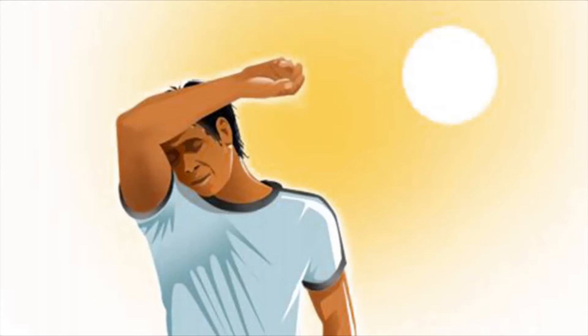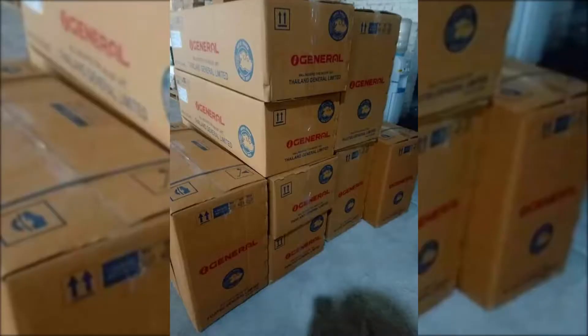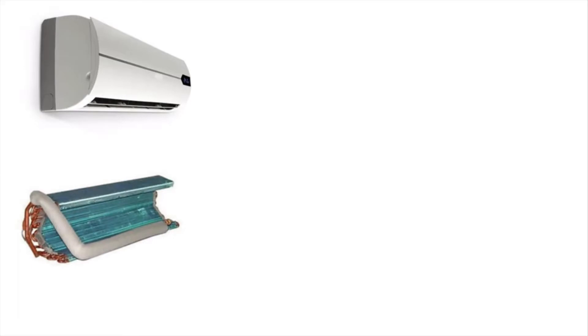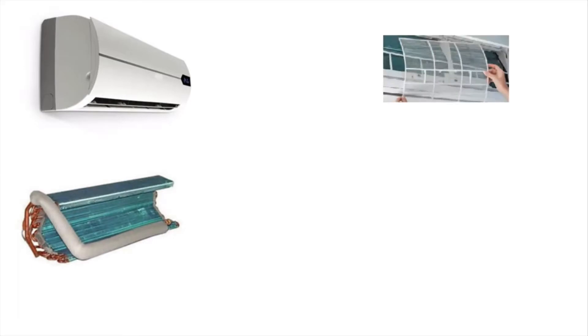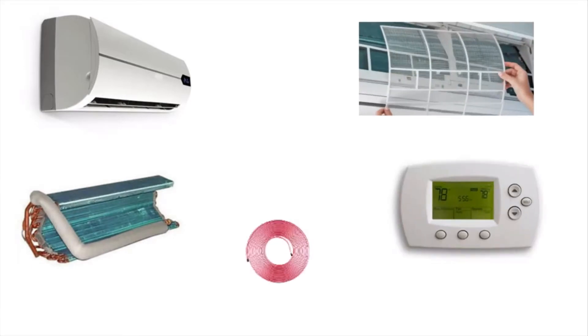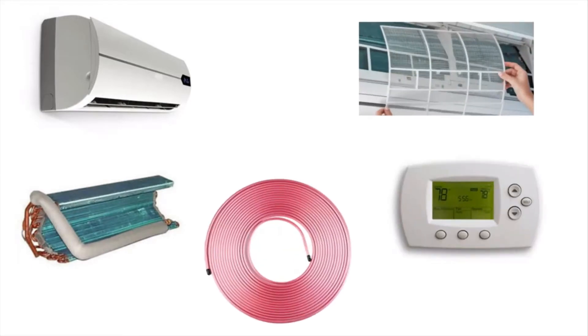Air conditioning systems are more than just a condenser unit. A typical split system air conditioner has lots of moving parts, including an indoor unit, an evaporator coil, air filter, thermostat, and copper tubing that connects the indoor and outdoor units.